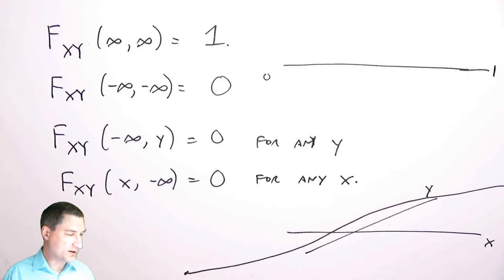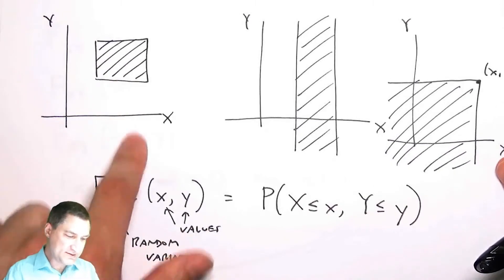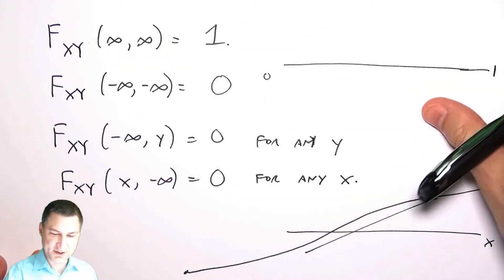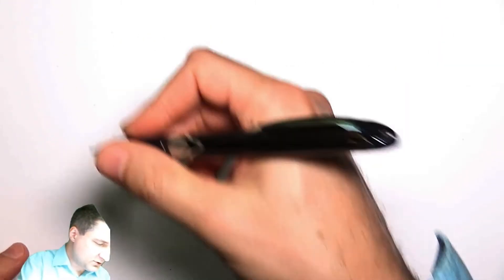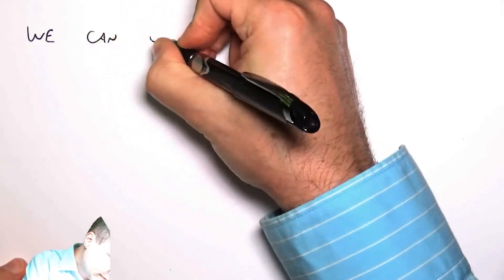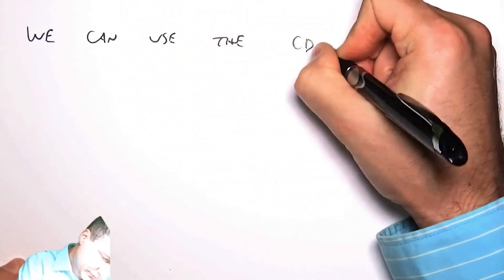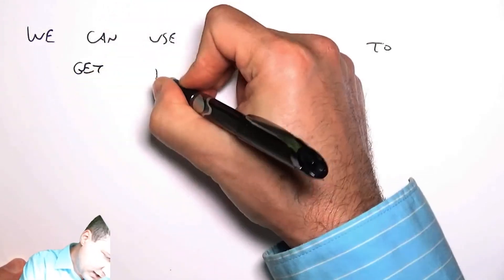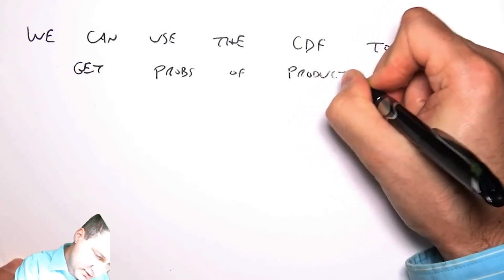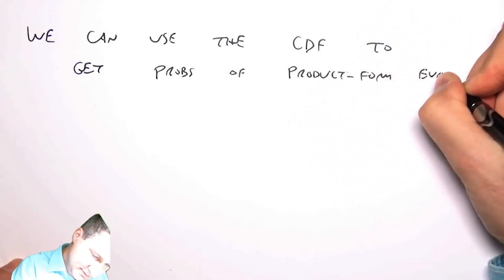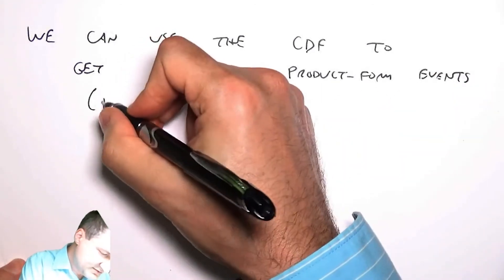Once I have the CDF, I can use it to look at the probabilities of events like this. These events are sometimes called product form events because they look like something that's an interval in x multiplied by an interval in y. So we can use the CDF to get probabilities of what are called product form events—fancy word for saying rectangles.